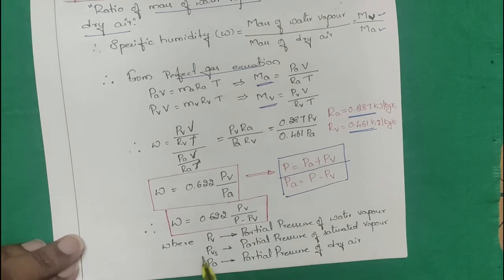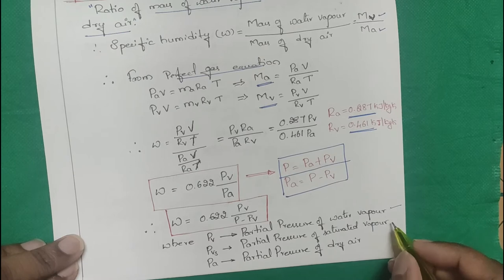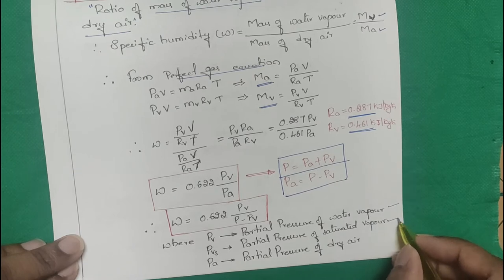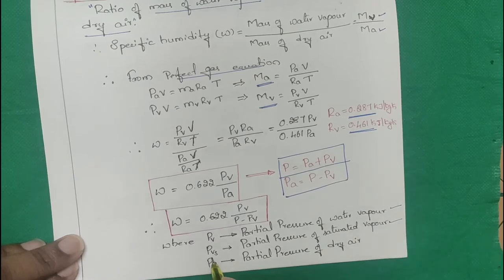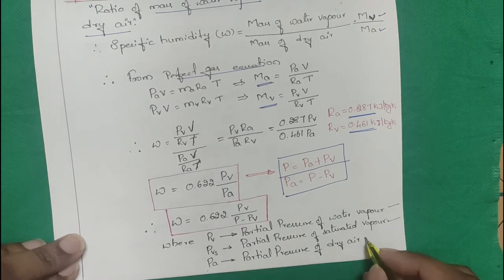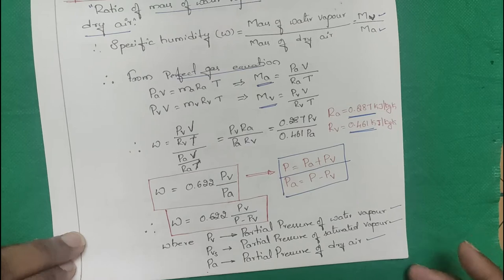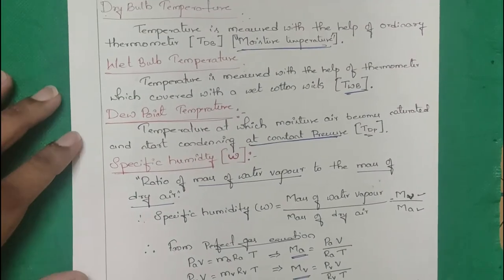Here pv is the partial pressure of water vapor, pvs is the partial pressure of saturated vapor, and pa is the partial pressure of dry air. This completes the specific humidity derivation.